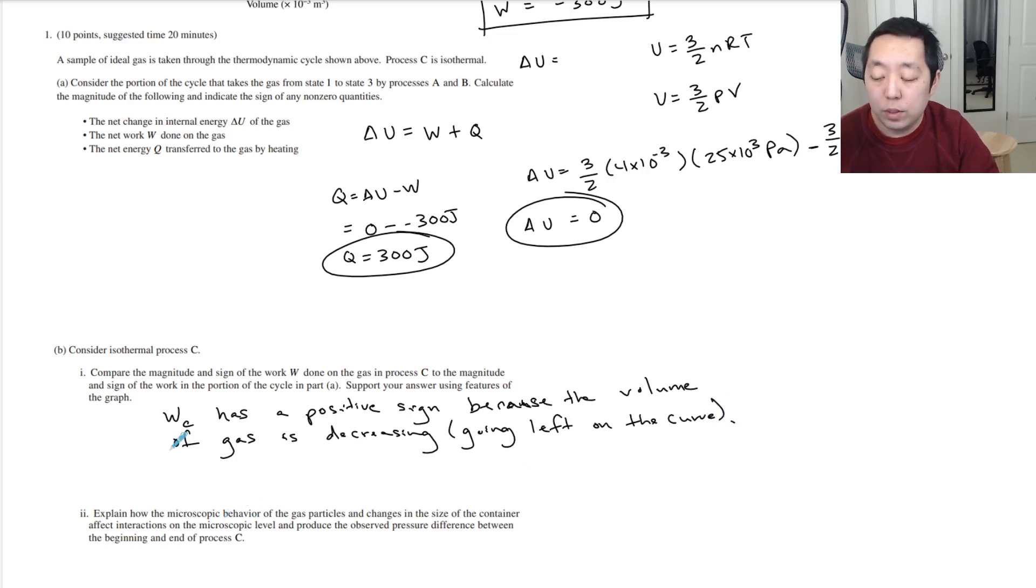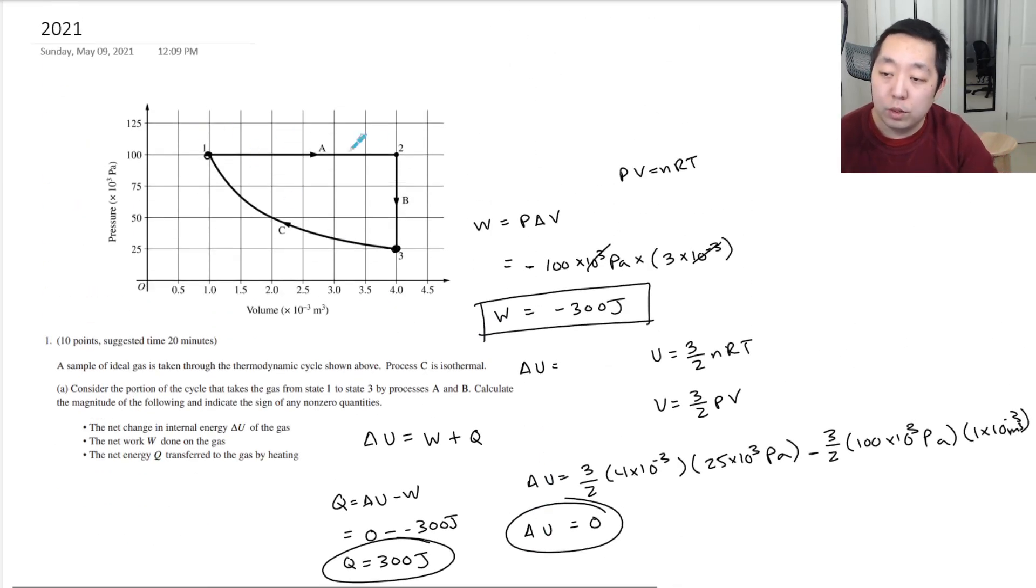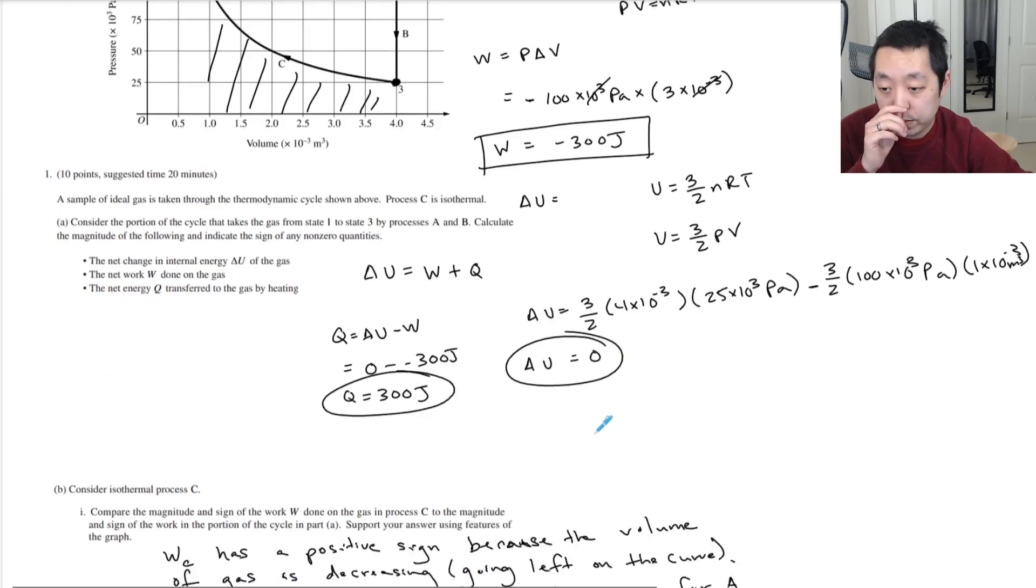So we would say the work in part C has a positive sign because the volume of the gas is decreasing, going left on the curve. How about the magnitude? Well the area under the curve for C is less than the area under the curve for process 1. And that implies that the work, the magnitude of the work on C is less than the magnitude of the work from the AB process. In other words, when you do from A to B, that area is larger than this area because this is the area of the work being done on the gas.